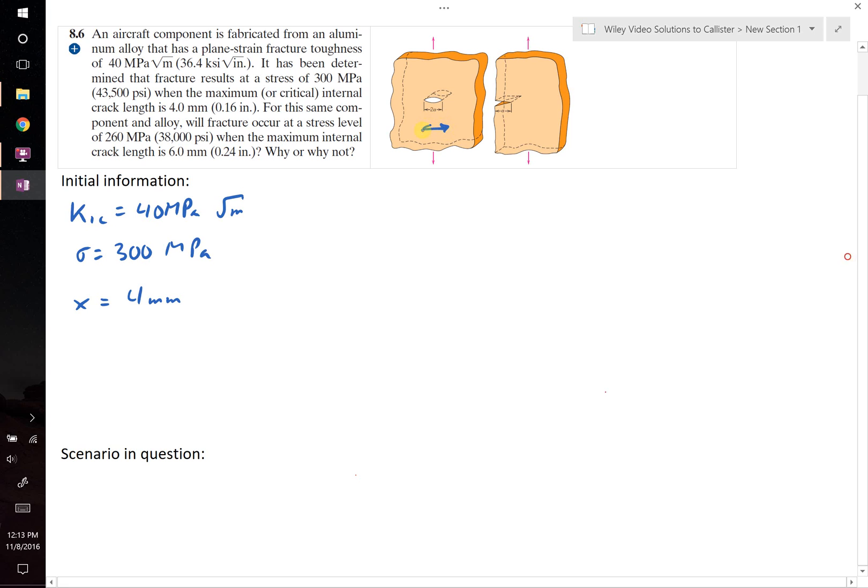Now x, that's this total length of the flaw. But because it's an internal flaw, we know that x is equal to 2 times the half-crack length. Therefore, our half-crack length is 2 mm.